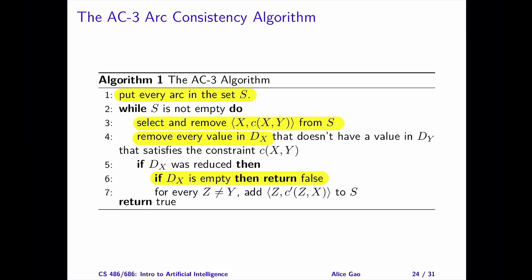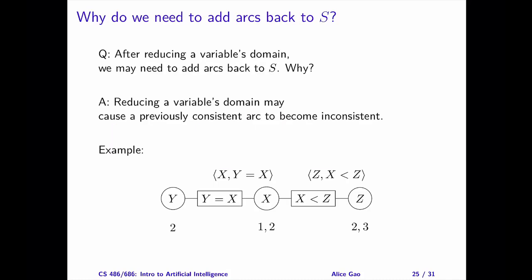The last few lines in the algorithm deserve some further discussion. In particular, after reducing a variable's domain, why do we need to add these arcs back into the set S? The reason is that reducing a variable's domain may cause a previously consistent arc to become inconsistent. If this is a possibility, we need to add the arc back to S so that we will check it again.